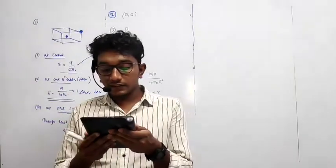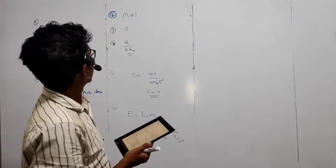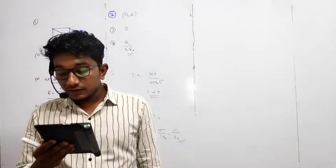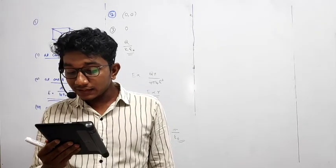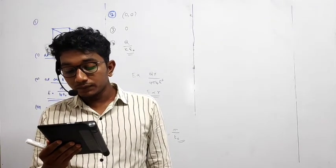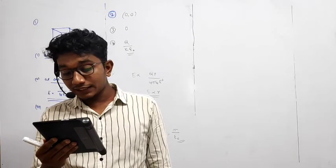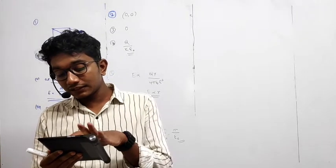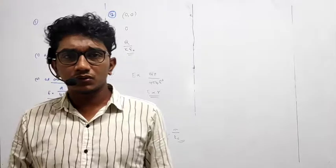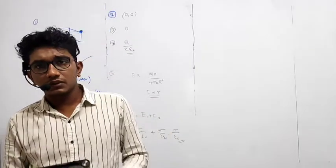Question number 3. Two concentric shells as shown, enclosed charge Q and minus 2Q. The electric flux from the shell radius R is 0. What is the net charge? 0.